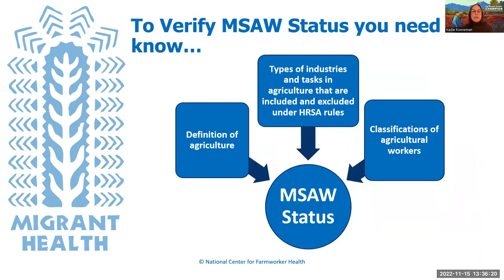To verify migratory or seasonal agricultural worker status, there are three things you need: an understanding of the definition of agriculture and the tasks and industries in agriculture that are included and excluded under HRSA's guidelines, and the classifications of agricultural workers. These three things will tell you the MSAW status. We're going to break these three things down and go into more detail.